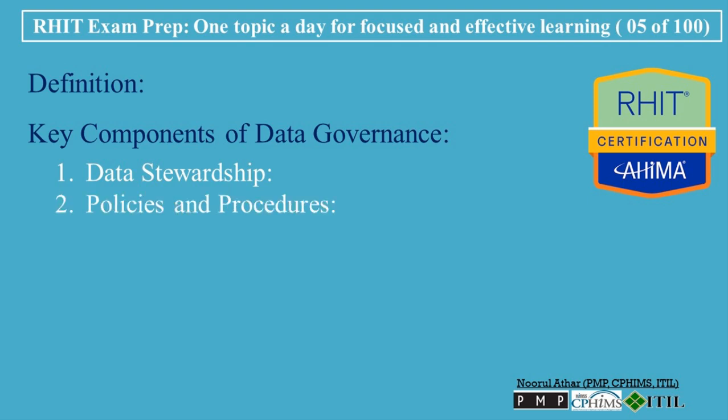2. Policies and Procedures — establishing clear policies and procedures is essential for guiding how data is collected, stored, shared, and protected. These policies ensure that all staff members understand their responsibilities concerning data governance. 3. Data Quality Management — ensuring data quality involves processes to validate, clean, and enhance data accuracy and consistency. High-quality data is vital for informed decision-making in healthcare.